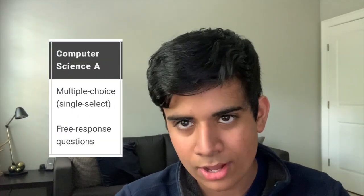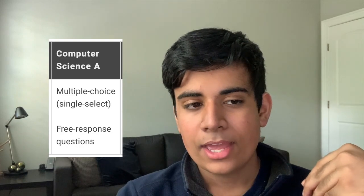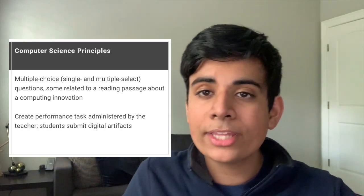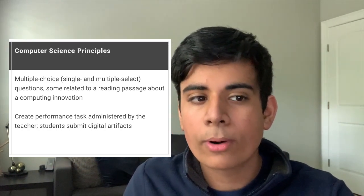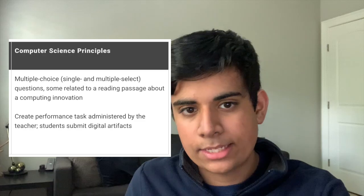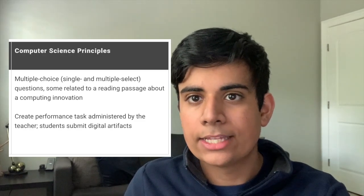Now let's talk about the exams for these two classes. For AP Computer Science A, you'll take a test with multiple choice and free response sections — 40 multiple choice questions and four FRQ questions. For the Computer Science Principles test, you'll only be doing multiple choice: either single or multiple select questions, meaning standard A through E multiple choice or select-all-that-apply type questions.